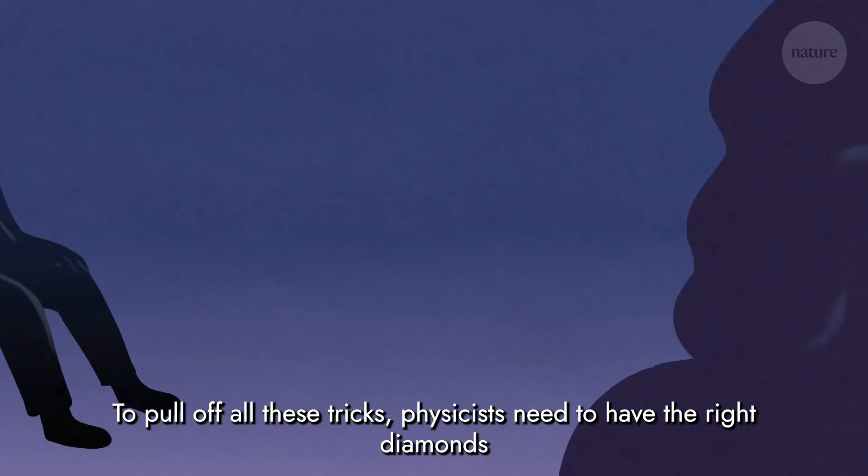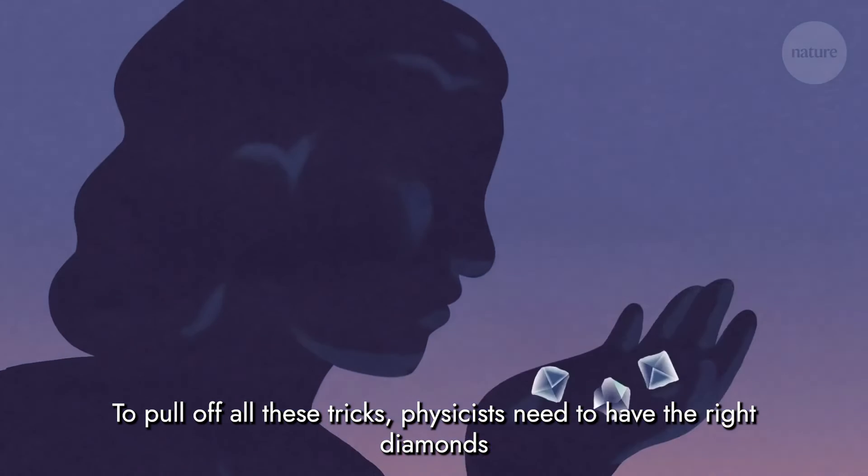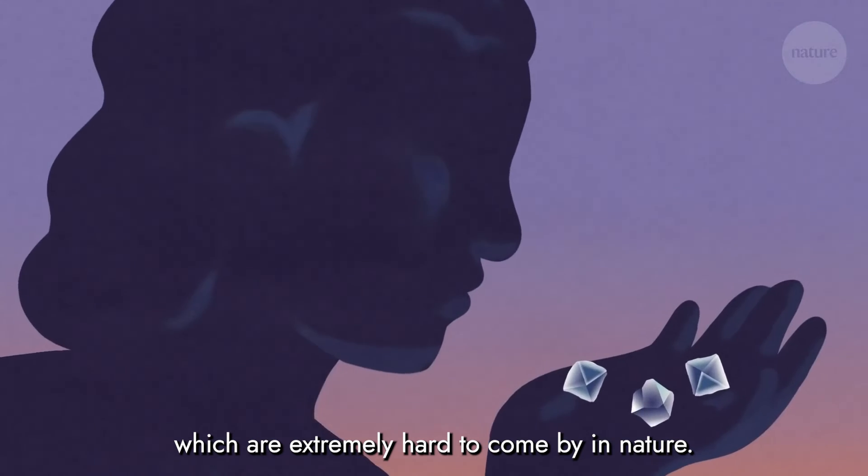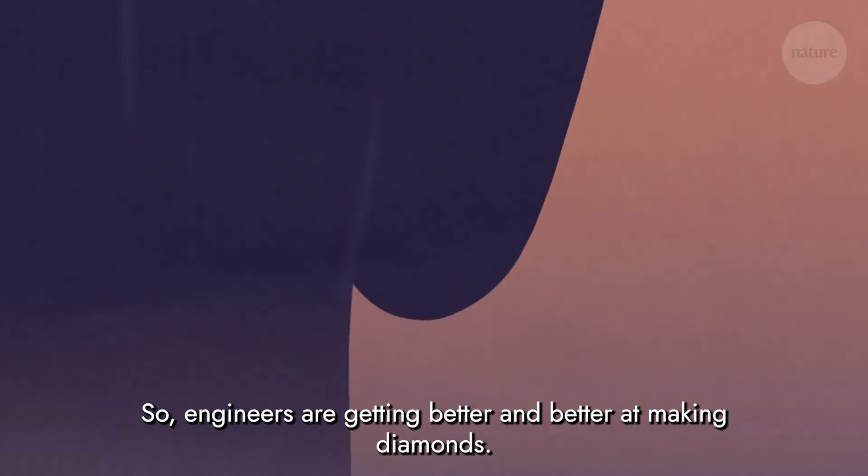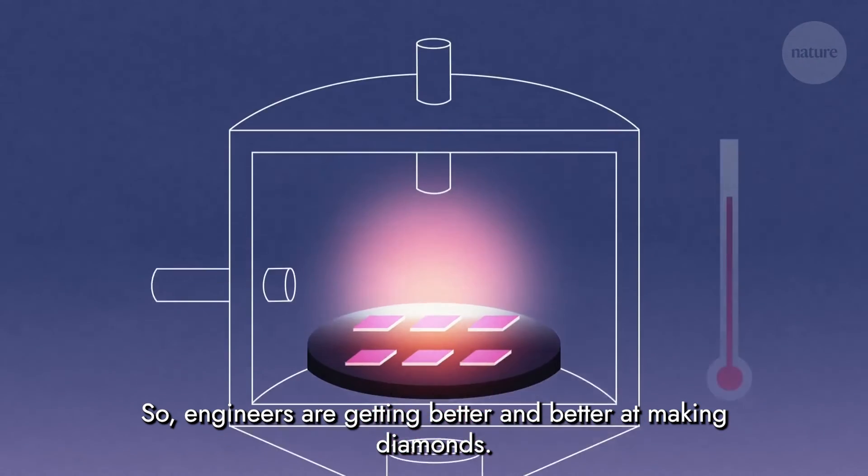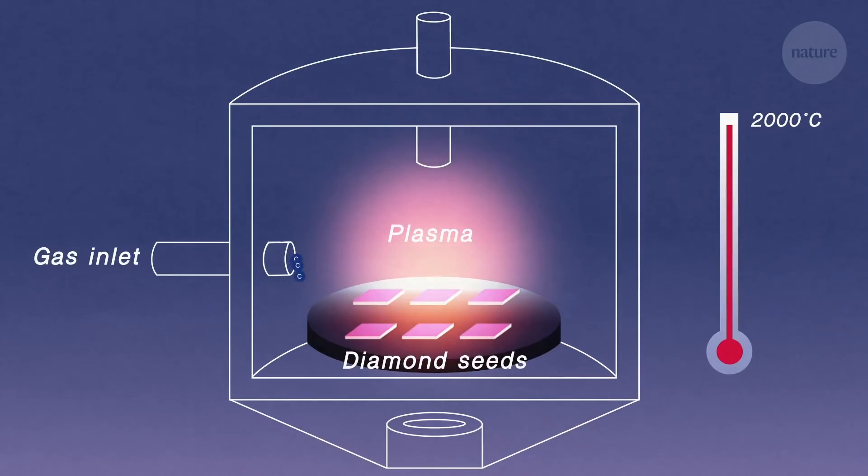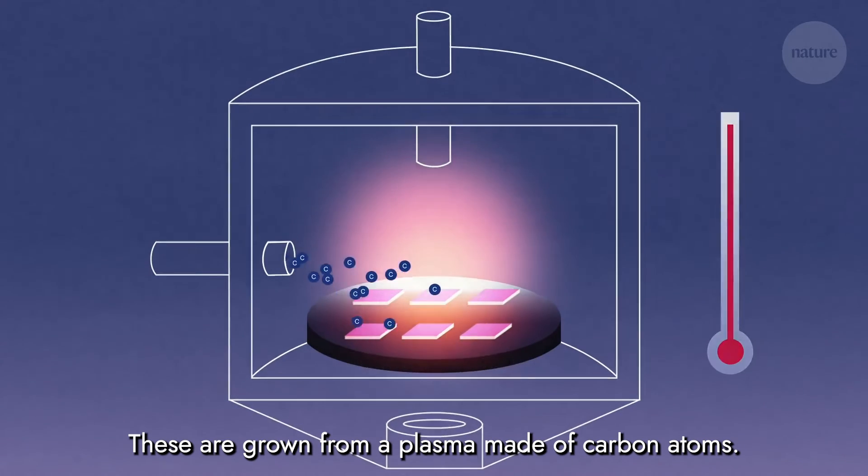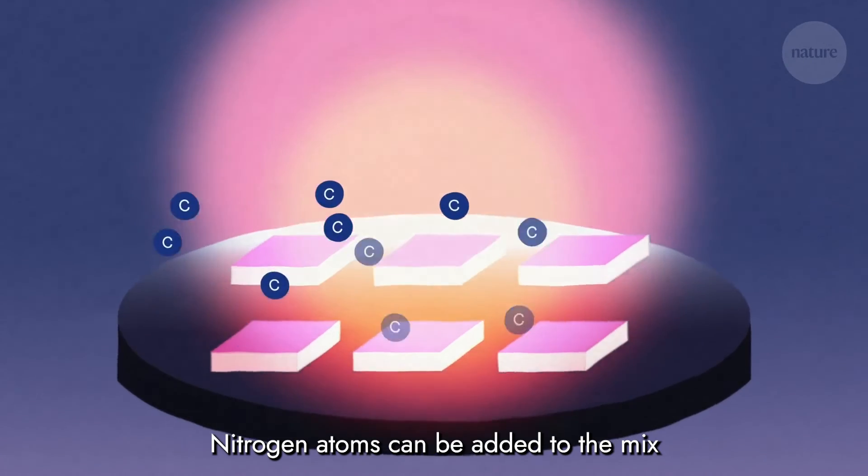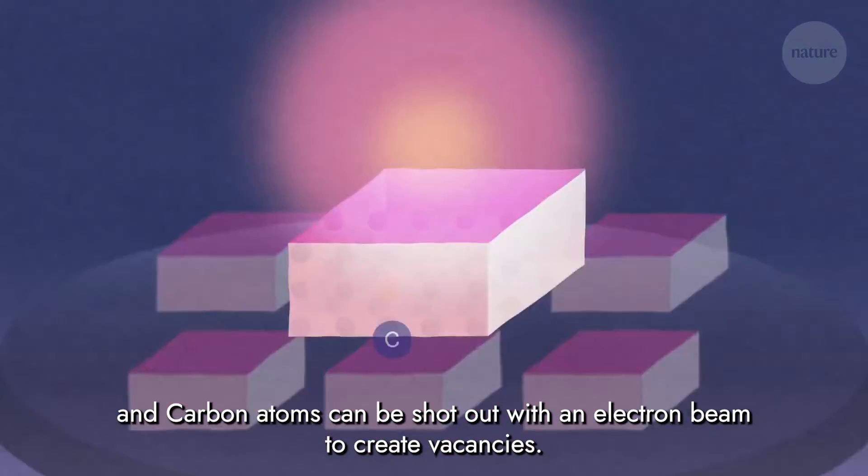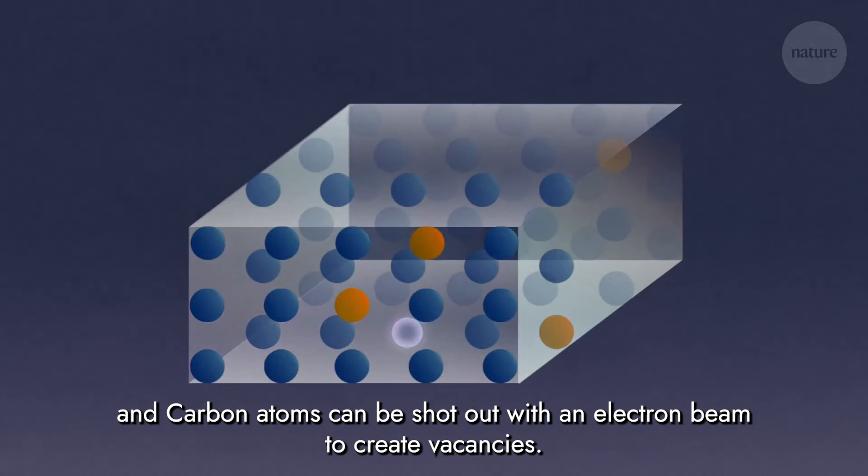To pull off all these tricks, physicists need to have the right diamonds, which are extremely hard to come by in nature. So engineers are getting better and better at making diamonds. These are grown from a plasma made of carbon atoms. Nitrogen atoms can be added to the mix, and carbon atoms can be shot out with an electron beam to create vacancies.